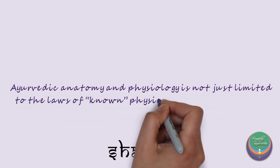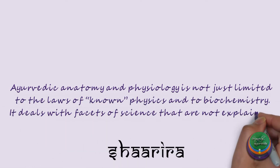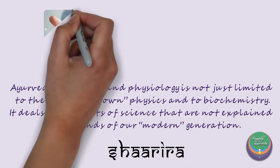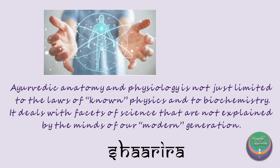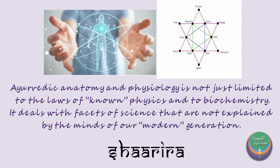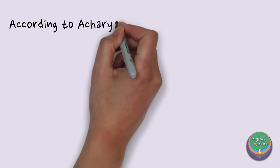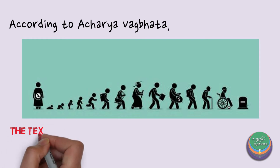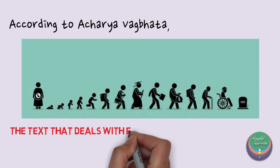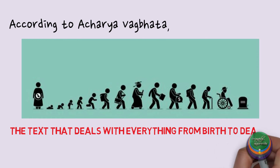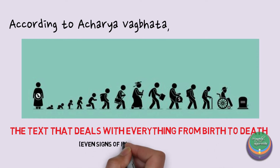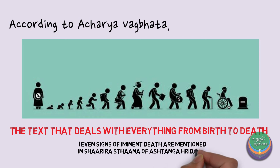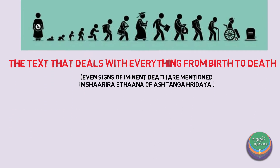Here, the term Daiva represents metaphysical aspects and the term Manusha represents the physical aspects of the body. Ayurvedic anatomy and physiology is not just limited to the laws of known physics and biochemistry — it deals with facets of science not explained by modern understanding. Acharya Vagbhata too has explained that Sharira Sthana is that part of the text wherein Janma and Marana is detailed, and even Rishta Lakshanas are mentioned in Sharira Sthana of Ashtanga Hridayam.